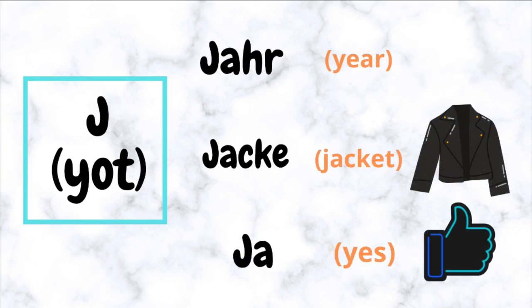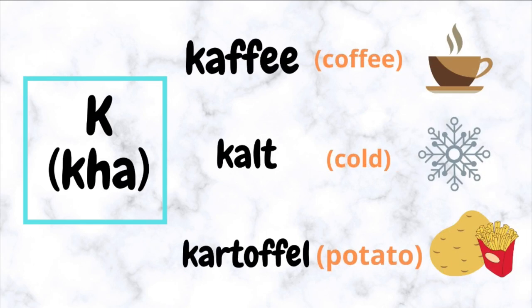J (Yacht) — the sound of J is Y in German. For example: Yaar, Yaak, Ya.